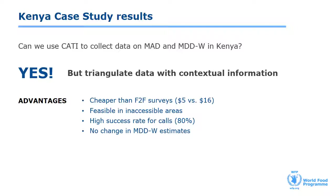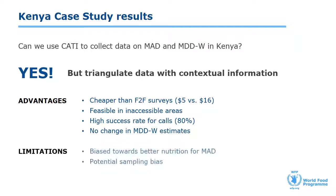The survey was also feasible in some of the inaccessible areas of the country. Despite poor network coverage in some of the areas, we were able to contact 80% of the participants twice using both modes. While we found a sample bias — as women with phone access have comparatively better sociodemographic characteristics — the MAD and MDDW estimates between the two groups were not significantly different. When we compared the two modes, the MDDW estimates collected using CATI were similar to face-to-face estimates. However, estimates of MAD from CATI surveys were much higher than results from face-to-face surveys. Despite this result, we found that the mode effect on MAD was consistent — scores were consistently higher via CATI across the two rounds of data collection and in both locations — so it is possible to use CATI data to conduct trends analysis using these indicators. As mentioned earlier, there is a potential sampling bias.